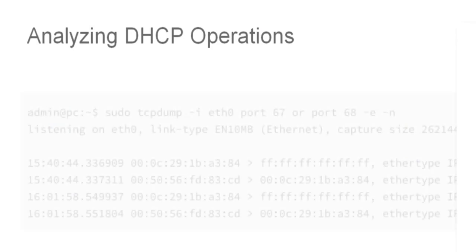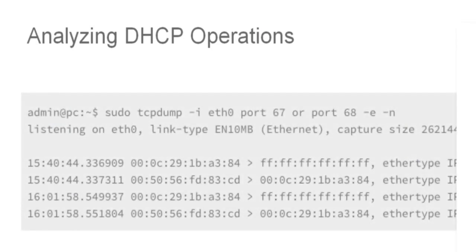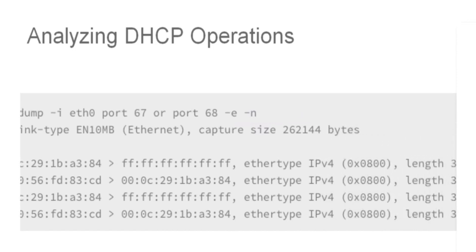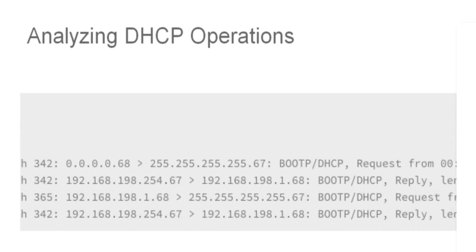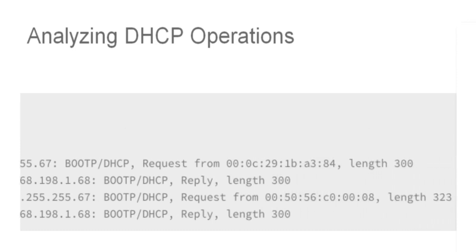Now that you understand how DHCP works, you may find it necessary to analyze DHCP packets when you're monitoring or troubleshooting DHCP issues. This first example shows the output from the TCPdump command on a Linux machine. In this example, we're listening to eth0, which is specified using the dash I option. Notice that both UDP ports 67 and 68 are included in the filter. The dash E option is used to display the source and destination MAC address, and the dash N option displays addresses instead of names. From this output, you can observe the DHCP requests and the reply messages between the devices, and the last line showing the MAC address being associated with an IP address.